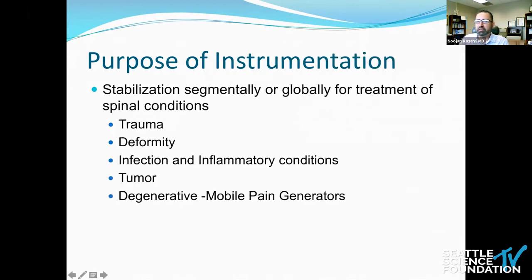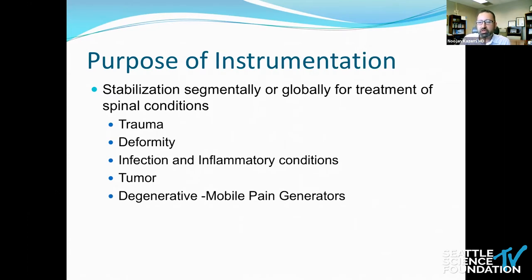The purpose of instrumentation comes into play when we need to obtain stability and stabilization across a range of different conditions for the treatment of spinal disease. That includes from trauma where there's fracture and instability, all the way through deformity, through infection, where there's a neoplastic process, and to degenerative conditions where we have pain generators as part of the mobile spectrum of the use of our spine.